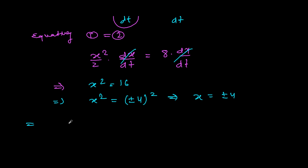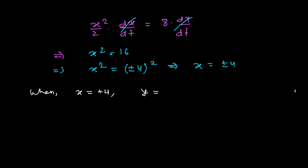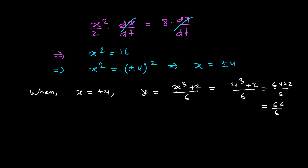We got X equals plus 4 and minus 4. Now we can find the corresponding Y values. When X equals positive 4, we use the curve equation 6Y equals X cubed plus 2, so Y equals (X cubed plus 2) divided by 6. That gives (4 cubed plus 2) divided by 6, which is (64 plus 2) divided by 6, equals 66 over 6, equals 11. So the first point is (4, 11).